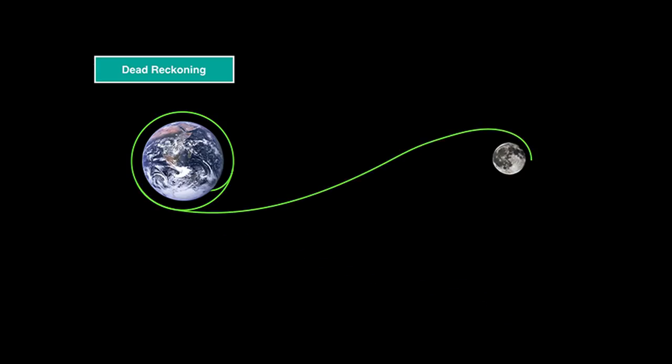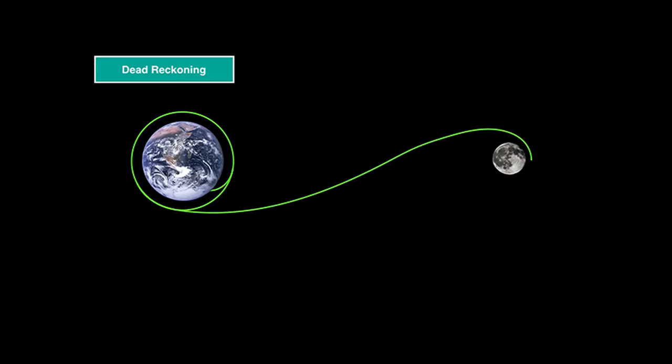Unfortunately, linear extrapolation doesn't work in space as we have gravitational forces which bend our path. Thankfully, there are two mathematical models implemented in the Apollo guidance computer: conic integration, based on the Keplerian orbit model, which assumes one perfectly round gravitational body influencing our flight path; and Encke's integrating method for perturbation, considering multiple bodies with gravitational imbalances. This helps to understand why we need a computer onboard for conscious flight to the moon.